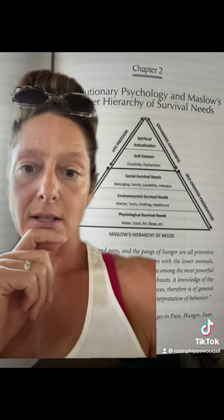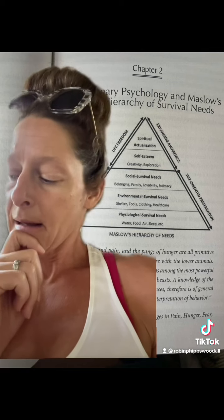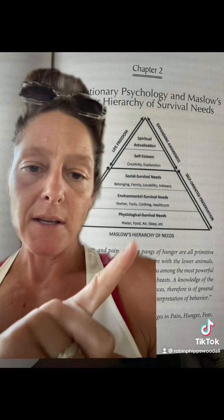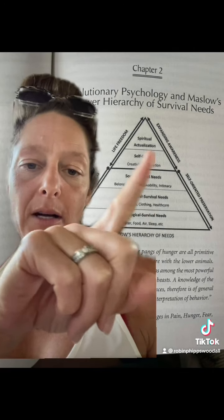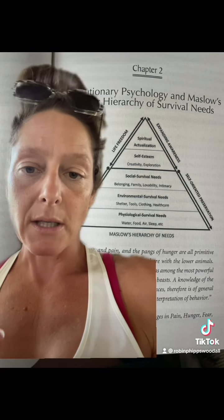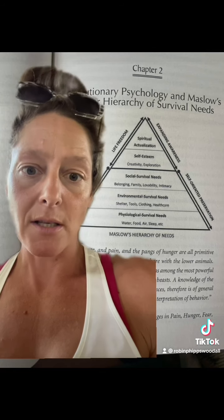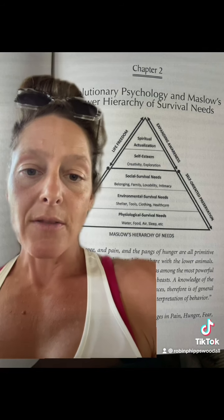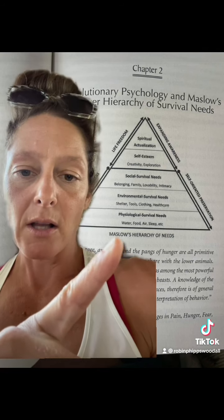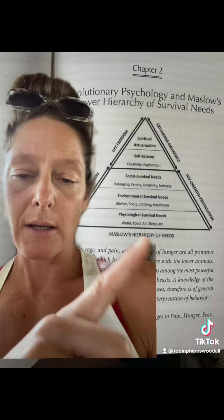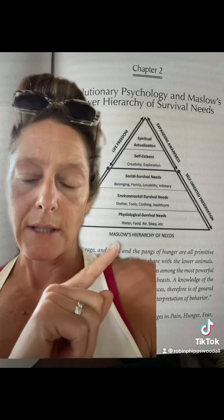Anyways, Maslow's hierarchy of needs — I use it a ton and I just want to briefly go over it. The basic understanding is that we as human beings are very predictable in our behavior. Maslow theorized that the most important needs to life and life sustenance are the most valuable, and our brain and psychology will fixate on those things until they're secured. These would be the foundation of our psychology: water, food, air, sleep, excretion — physiological survival needs.